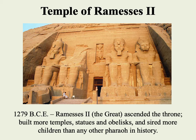This temple here is probably the most famous. It might interest some people to know that when they constructed the high Aswan Dam in Egypt in the 20th century, this temple would have been submerged by the lake created by the new dam. So they actually had to disassemble the temple of Ramses II, move it, and then rebuild it — a rather impressive modern-day project.